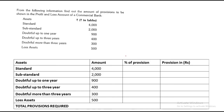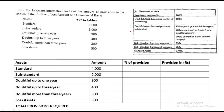First, read this table and then we'll see how to solve it further. For standard assets, the provision percentage is 0.40%, so 4,000 × 0.40% = 16 lakhs. For substandard — if secured or unsecured is not mentioned, we assume secured — so 2,000 × 15% = 300 lakhs.